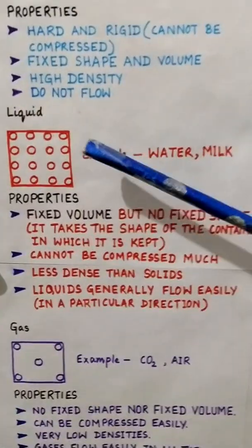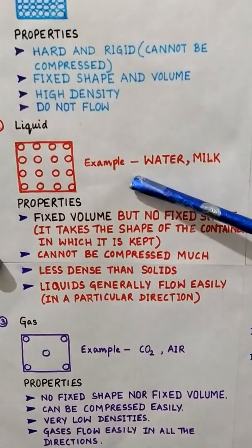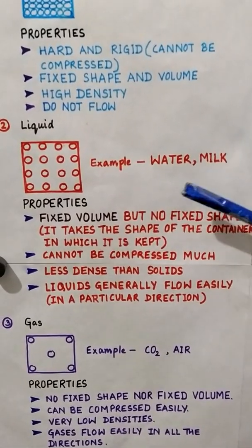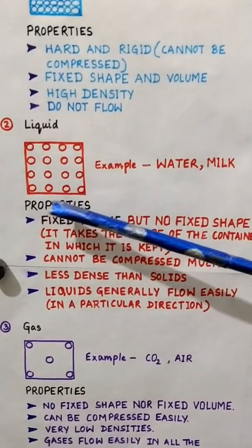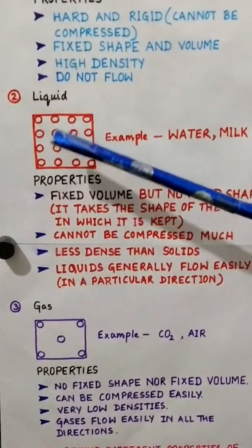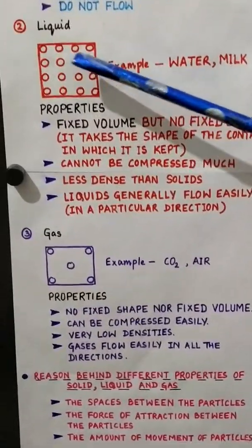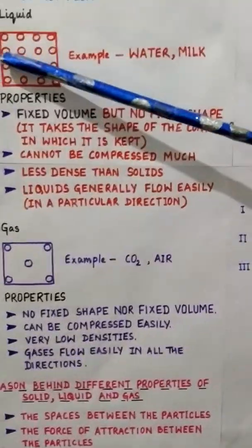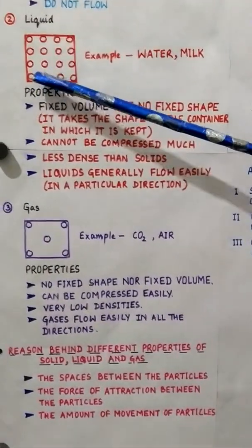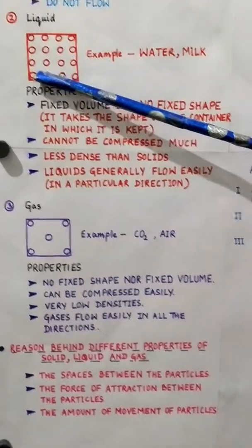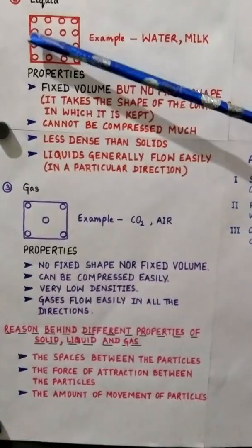Now let us consider the second state of matter, that is liquid. Examples of liquid are water, milk, oil, etc. As you can see in the diagram, the space between the particles of a liquid is a little more in comparison to that of the solid, and so we can say that it has less force of attraction between the particles.